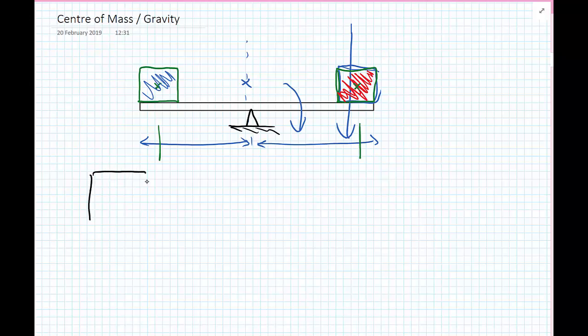To recap, the centroid is where on a body the geometric center is. It just has to do with the dimensions of a body. We showed in the previous example how we could calculate the geometric center of a composite body.